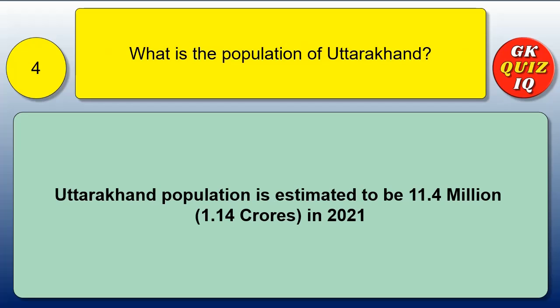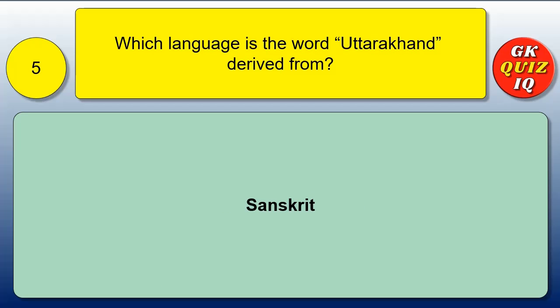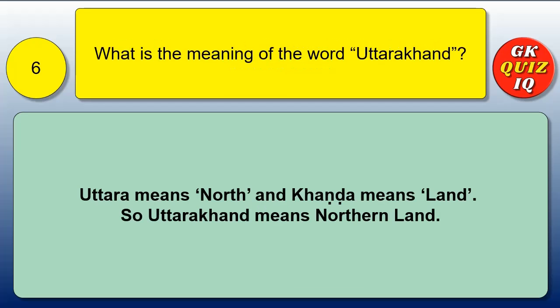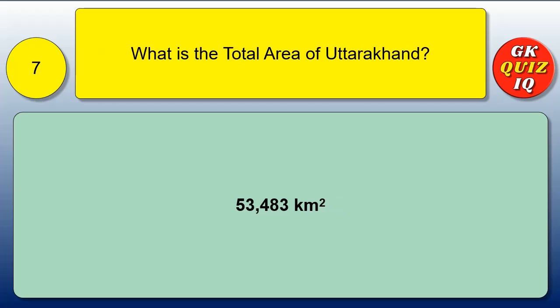What is the population of Uttarakhand? Uttarakhand's population is estimated to be 11.4 million, that is 1.14 crores in 2021. Which language is the word Uttarakhand derived from? Sanskrit. What is the meaning of the word Uttarakhand? Uttara means North and Khand means Land, so Uttarakhand means Northern Land. What is the total area of Uttarakhand? 53,483 square kilometers.